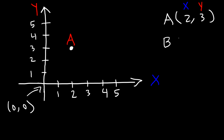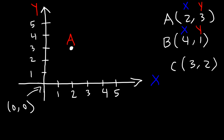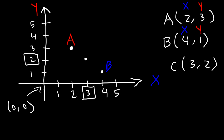Now let's try a few more examples. Go ahead and plot point B, located at (4, 1), and plot point C, which is located at (3, 2). So the x-value is 4 and the y-value is 1 — they meet at that point, so this is point B. Now to plot point C, we locate an x-value of 3 and a y-value of 2, which corresponds to this point where they intersect. And that's point C. That's how you plot a set of ordered pairs on a coordinate plane.